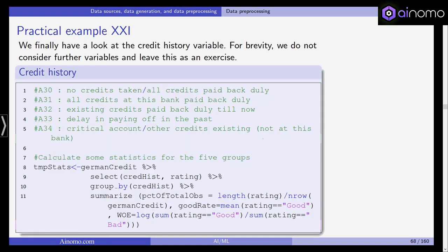Finally, we also have a look at the credit history variable. For brevity, we do not consider further variables, though we had 20 covariates in our data sample. The credit history has five values: no credits taken, all credits paid back duly, all credits at this bank paid back duly, existing credits paid back duly till now, delay in paying off in the past, and critical account. The second level, all credits paid back duly, will probably be the best predictor and best level if we are interested in a good rating because it means you've taken up loans and paid all those loans back in time. Critical account is the worst state. Let's calculate the percentage of total observations, the mean of good ratings, and the weight of evidence.